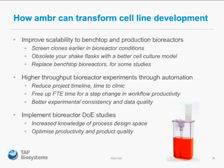So just to recap: how can AMBA transform cell line development? Improving scalability to benchtop and production reactors is a real step change in capability of the model. You can screen clones earlier in your process in bioreactor conditions, reduce risk associated with picking the wrong clones in a shake flask, and replace benchtop reactors for early process development studies. The automation really increases the throughput of bioreactor experiments, reduces project timelines, frees up scientists' time for more analysis, better decisions, and greater productivity. And a big win is the capability to do bioreactor DOE studies, which is being done as a matter of course in a number of places now — a real step change in what people can do around cell culture.